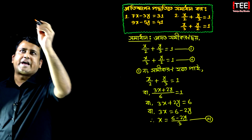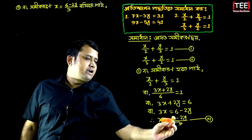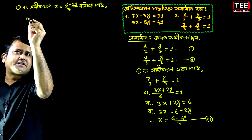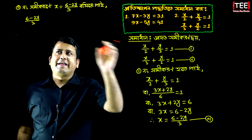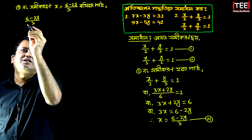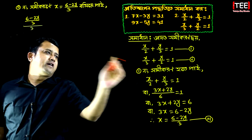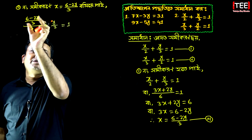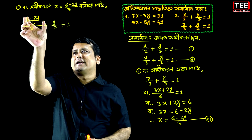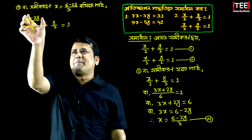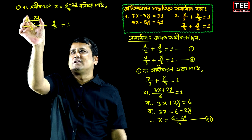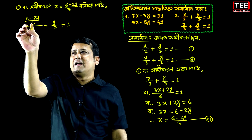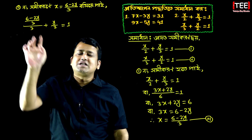6 minus 2y is 3. We have x equals 3. So we have to write it 3. This is plus y by 2 equal to 1. So 6 minus 2y is 2. It has 3. So we have 3.